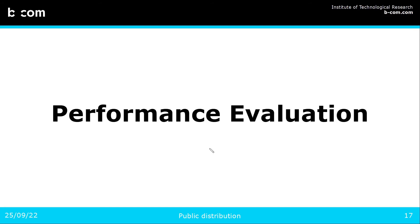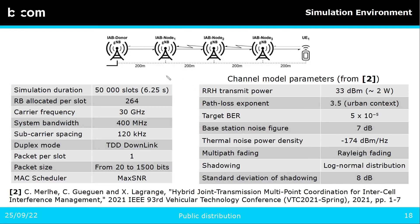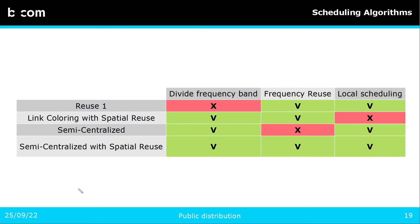To test this method, we performed performance evaluation using a custom simulator developed internally, running full buffer simulations to test different resource allocation solutions. We use the IAB network topology described at the top of the screen, and the simulation parameters are shown in the tables. The most important ones are that we work on the 30 GHz frequency band in TDD downlink only, so packets are generated by the donor and reach the UEs. We increased the size of the generated packets from 20 to 1500 bits, and we use a channel model described in the reference below to observe the impact of interference on receivers. We compare four different scheduling algorithms.